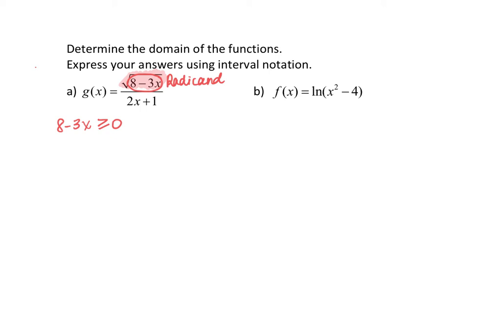There is a second restriction because we also have division — we have a fraction here. We know that we cannot divide by zero, as that would be undefined. So we also have to consider that this denominator cannot equal zero. There's an additional restriction: 2x plus 1 cannot equal zero. So we have to solve both of these inequalities and equations.